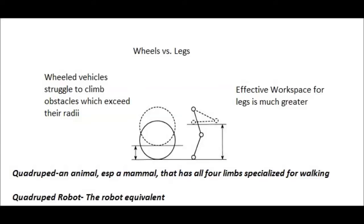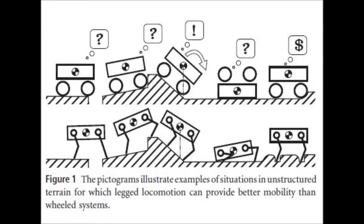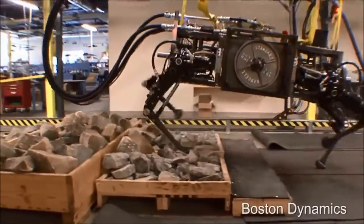Legs have a greater effective workspace than wheels. They are capable of traversing objects which may inhibit wheeled locomotion as shown in this graphic. Legged locomotion allows Alpha Dog to walk through the rocks with ease.